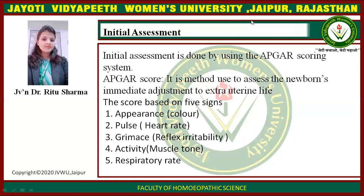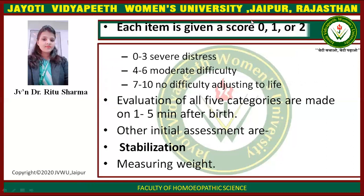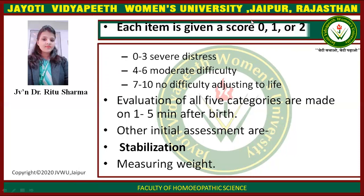Each of these five signs is scored accordingly, then we identify how much severity is expected. Each sign is given a score of 0, 1, or 2. A score of 0–3 indicates severe distress; 4–6 indicates moderate difficulty; and 7–10 indicates no difficulty adjusting to life. This evaluation of all five categories is made at 1 and 5 minutes after birth. Other initial assessments include stabilization and measuring weight.